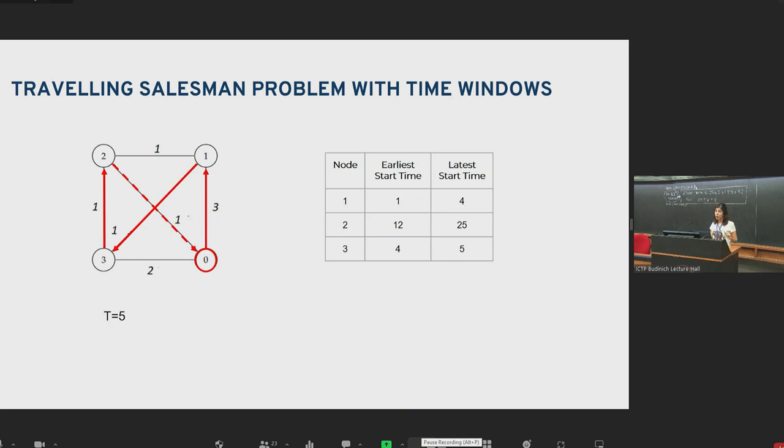We go to node two. Now earliest start time is 12, so we need to wait. But that's fine. We can wait. And we arrive to node zero at T equals 13. For node zero, we don't assume any early start or late start time. So this is a feasible route.